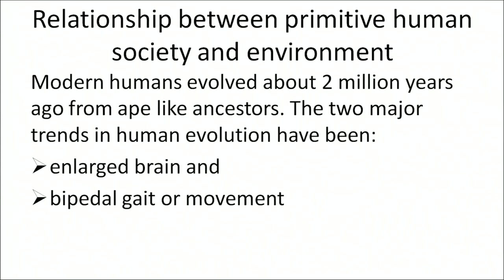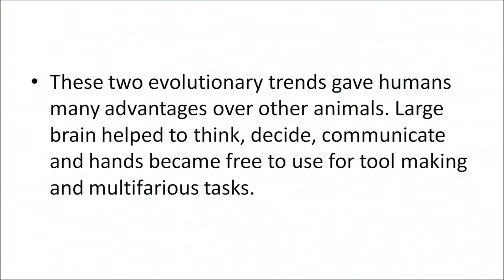Now let us talk about the relationship between primitive humans, human society, and environment — how did primitive hunters and gatherers discover agriculture and when did they begin leading a settled life? Modern humans evolved about 2 million years ago from ape-like ancestors. The two major trends in human evolution have been an enlarged brain and bipedal gait or movement, which gave humans many advantages over other animals.